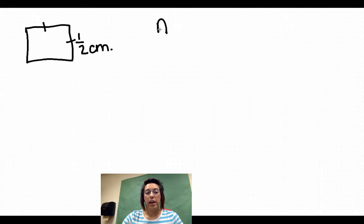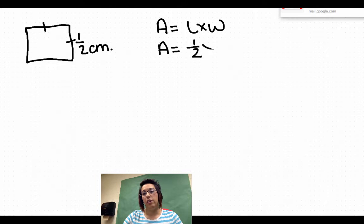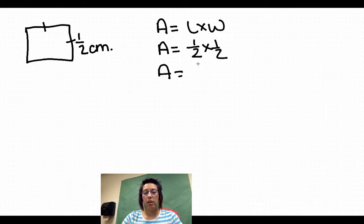So area equals length times width. We have area equals one half times one half. Area equals, remember we multiply straight across because it's multiplication. One times one is one, two times two is four. So one-fourth centimeters squared.